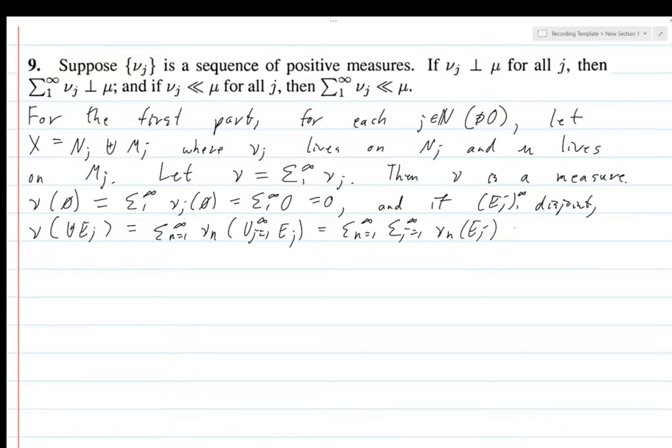nu_n E_j, then this is just sum from j equals 1 to infinity of nu of E_j and that's exactly what we wanted. Well that was a little more tedious than I was anticipating.